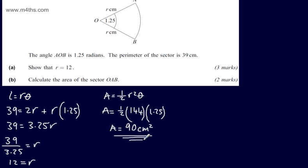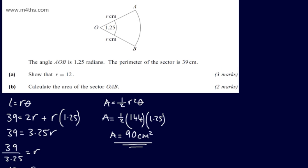You can, of course, use a calculator if you wish. If you calculate it mentally, either way, it's 90 centimetres squared. Two marks in total for part B.